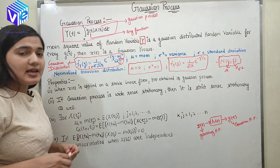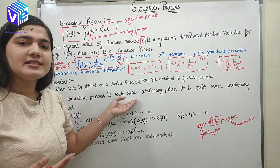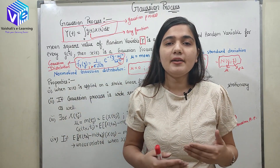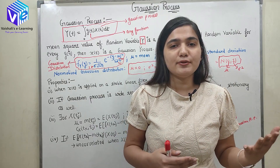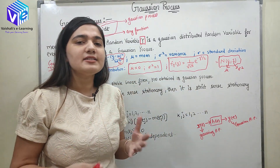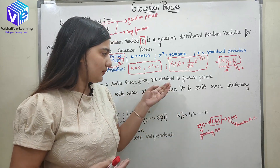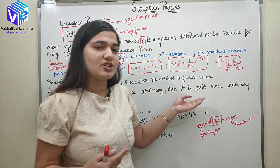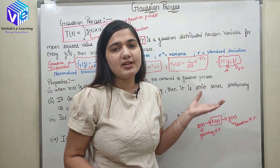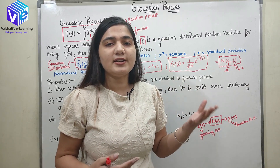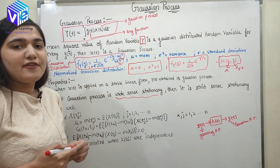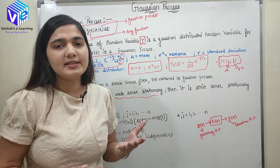The second property states that if I find out that a Gaussian random process is wide-sense stationary, then it is strictly stationary as well. For wide-sense stationarity, I find it for first and second order only, but for a Gaussian process, I can classify it as strictly stationary. So if someone asks whether a Gaussian random process is strictly stationary, you find out if it is wide-sense stationary. If yes, you can directly say it is strictly stationary as well.